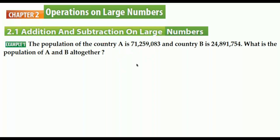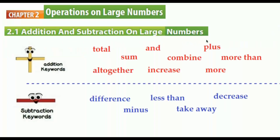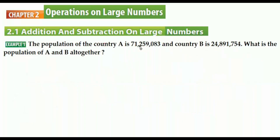First of all, understanding the question is more important than solving it. We have the population of country A and the population of country B. The question asks for the population all together. 'All together' is a keyword from the addition list, so we need to add these two numbers.